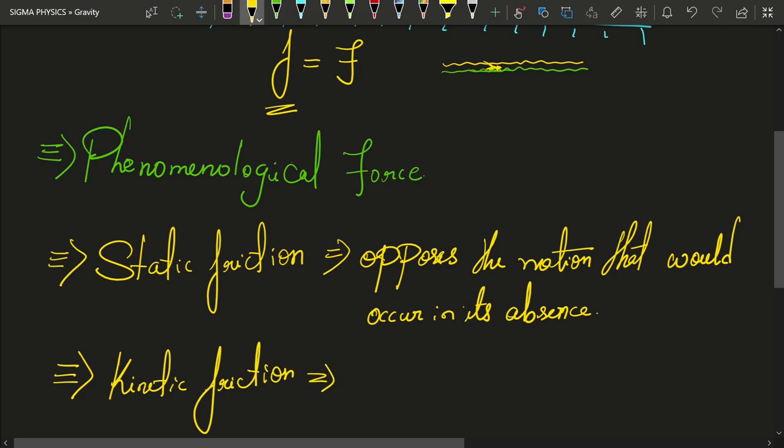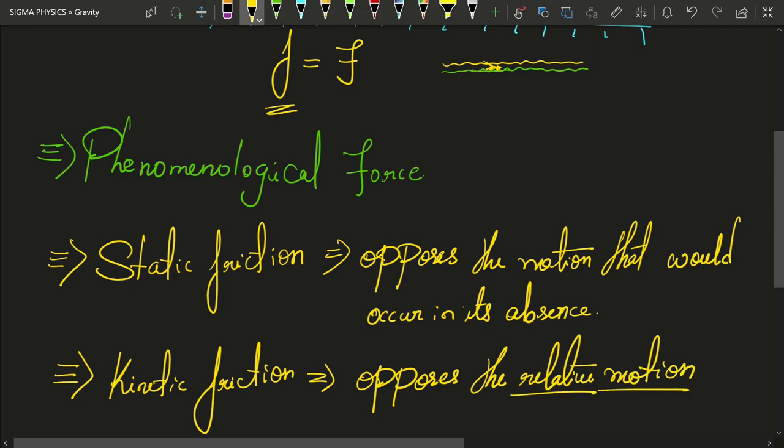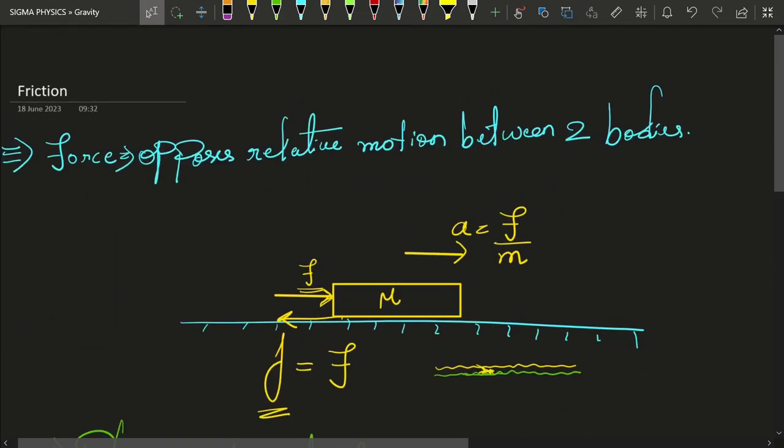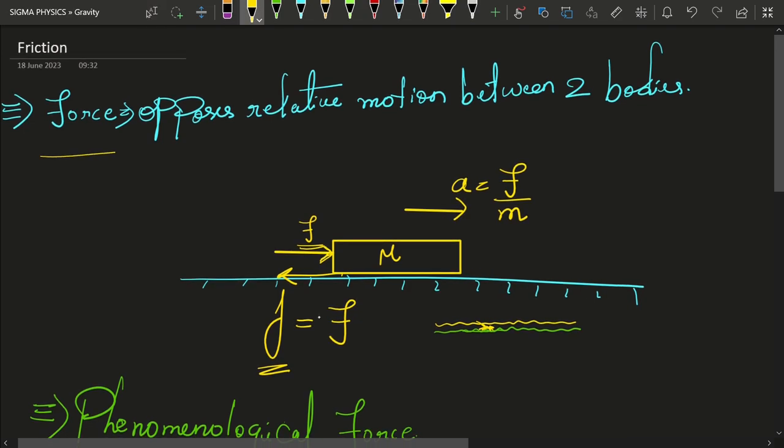So, kinetic friction is always opposite or opposes the relative motion. And this is what our definition was.